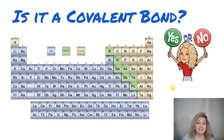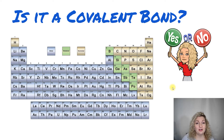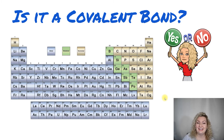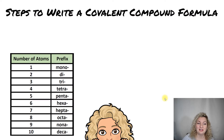First, is it a covalent bond? You need to make sure that your elements are all made up of non-metals. So if it's two non-metals bonding together, you have a covalent bond and you can move forward with naming the formula.